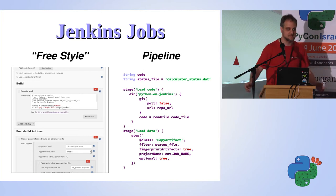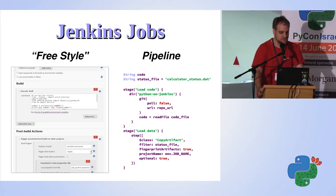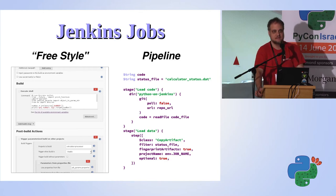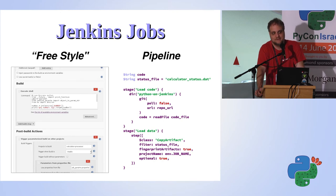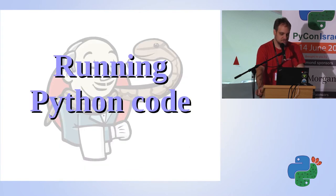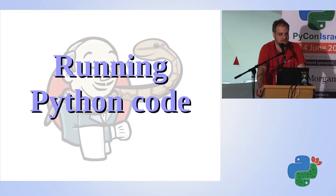Then you have pipeline jobs, which are a little bit more flexible. You actually write the entire job logic in Groovy, and you can decide when to allocate nodes, how many nodes to allocate, when to clone code, and what to do with it.